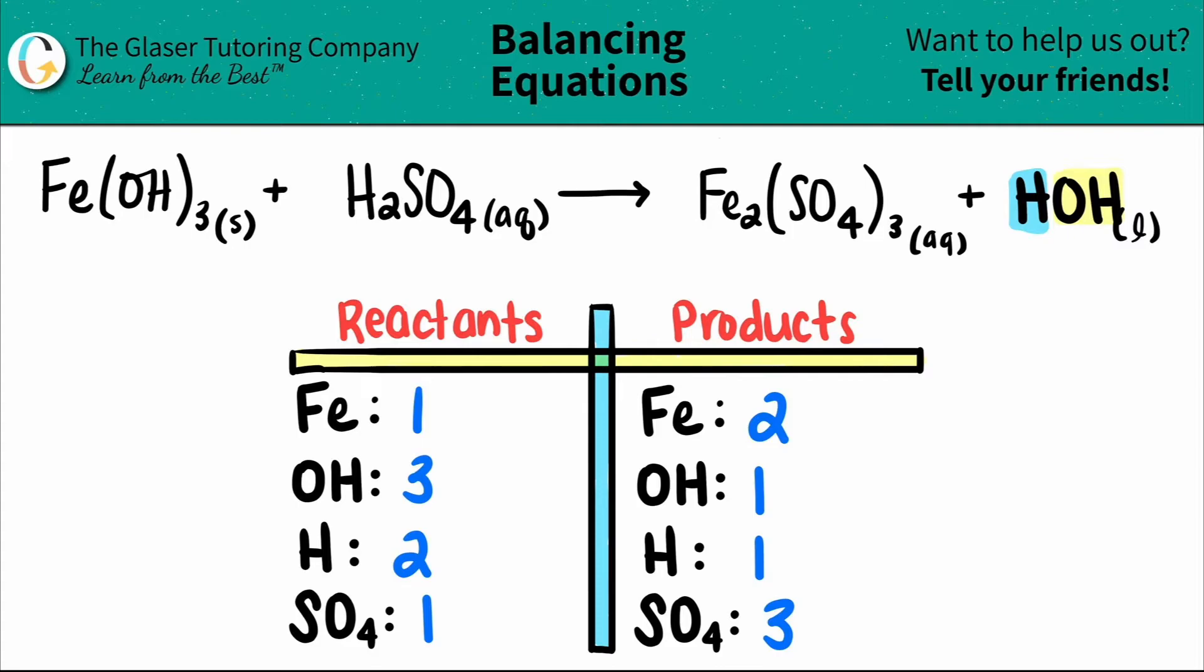Now we're getting ready to balance. So let's see. It doesn't matter which one we start off with. Let's pick the one that's easiest for us. Let's start with the irons. I see that I have two irons on the product side and I have one. We always try to get to the higher number by multiplication. So one times what will get us to two? One times two. And whatever number that you stated is the number that goes in the front with the element that has the element that you're talking about. So I said one times two. So I know that there's going to be a two here.